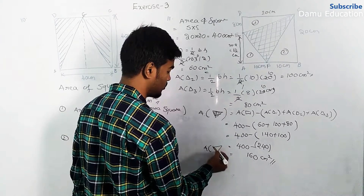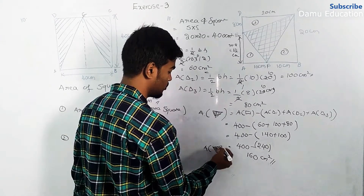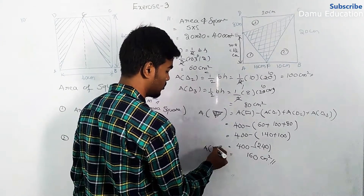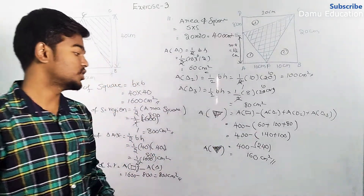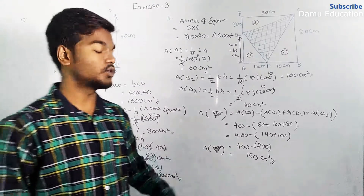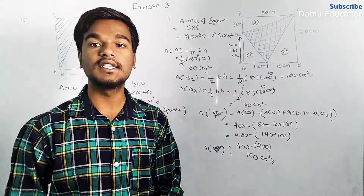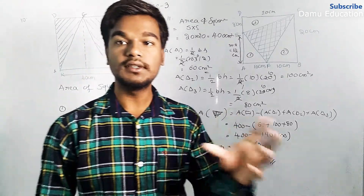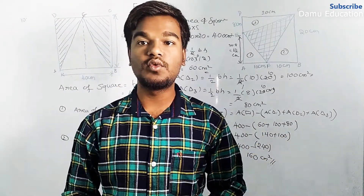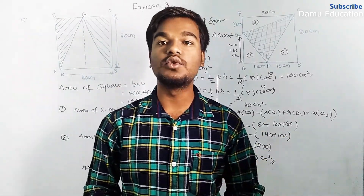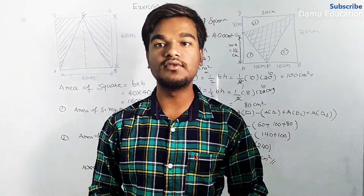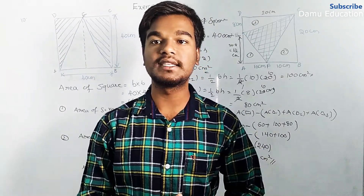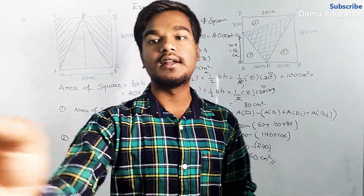So the area of the shaded region equals 160 centimeter square. Thanks for watching this video. If you liked the video, please give a thumbs up and subscribe.